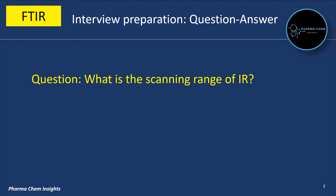What is the scanning range of IR? The scanning range of IR is 4000 cm⁻¹ to 400 cm⁻¹.